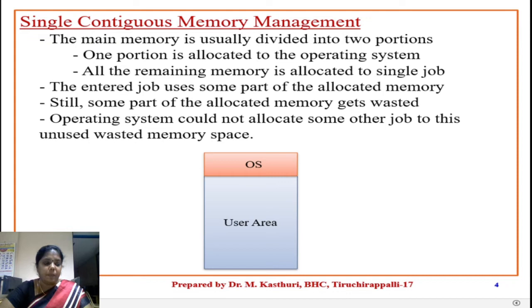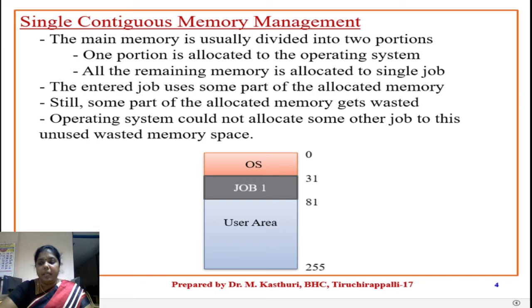In single contiguous memory management, the main memory is usually divided into two portions. One portion is allocated to the operating system, and all the remaining memory is allocated to a single job that has to be processed. The entered job uses some of the allocated memory, and hence some portion of the allocated memory gets wasted.